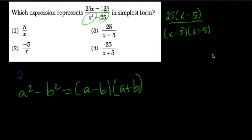So here, the nice thing is, and this is generally the way this works, is you want to just find two things that cancel out, and the remaining pieces are your answer. 25 over x plus 5, which is choice 4.